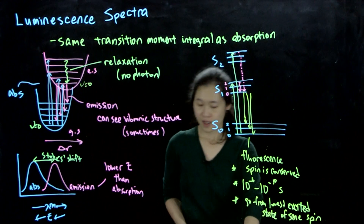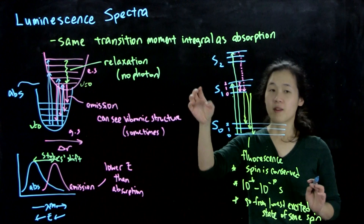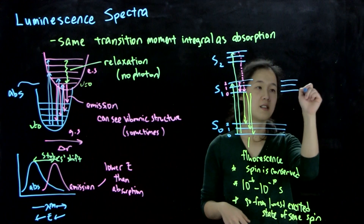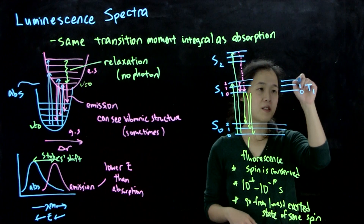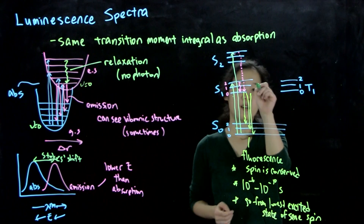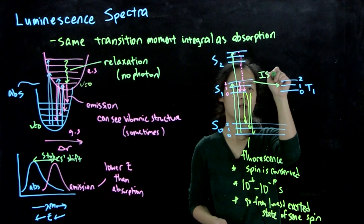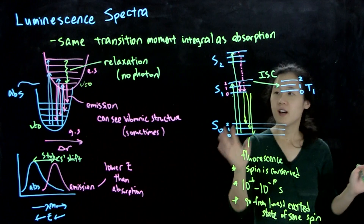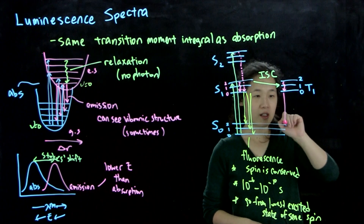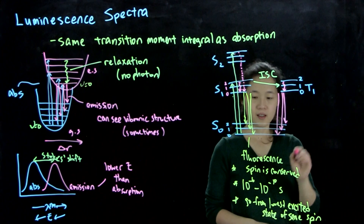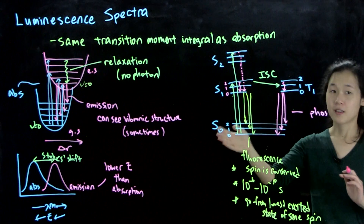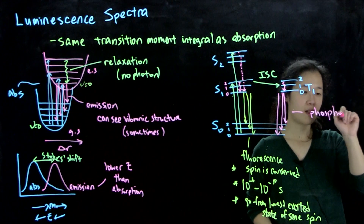Then there's phosphorescence. We've been talking about singlet excited states, but there could also be a triplet excited state. What can happen is inter-system crossing: we go from the singlet excited state over to the triplet excited state, where a spin flip is occurring — going from singlet to triplet. From there, we relax down to the lowest vibrational level and release a photon. This is phosphorescence — going from a different-spin excited state back to the ground state, from triplet to singlet, and it requires inter-system crossing.